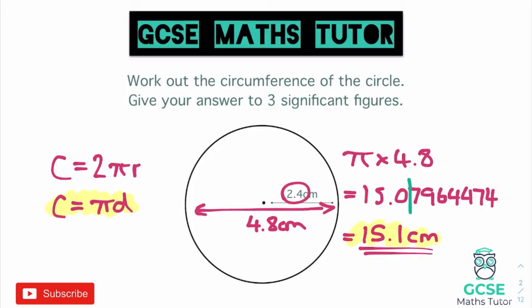All you need to be able to do for circumference is remember the formula — pi times diameter — identify the diameter, and stick it into your calculator. You also need to know how to find your pi button, otherwise you won't be able to type this in. Now let's have a go at some questions.